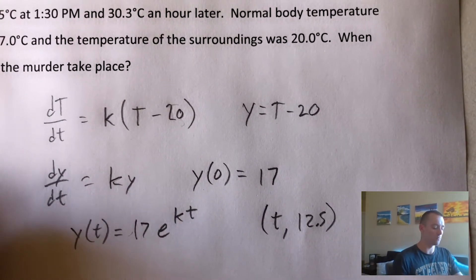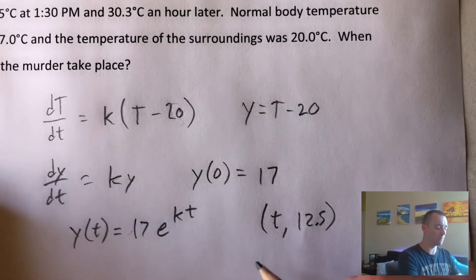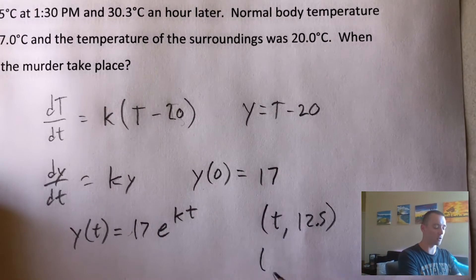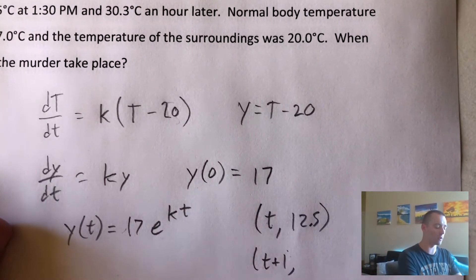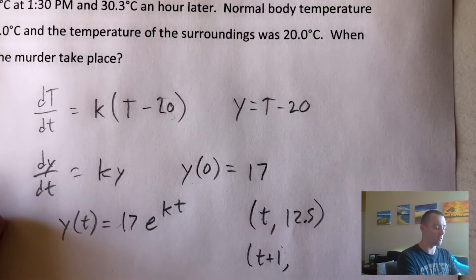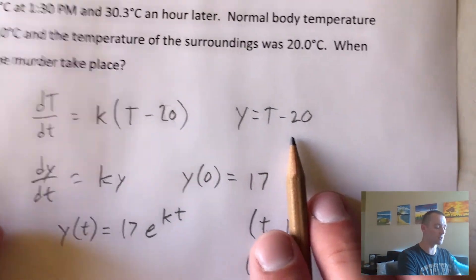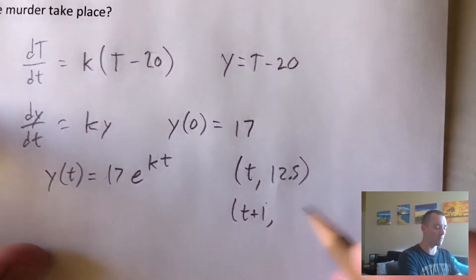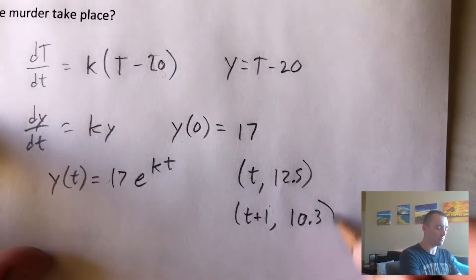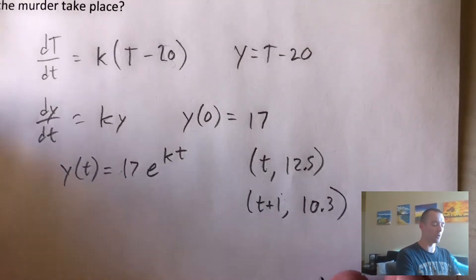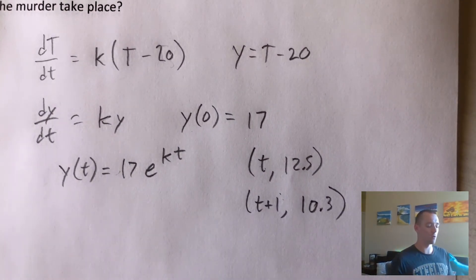One hour later, the temperature was 30.3 degrees. So at time T0 plus 1, we know the temperature was 30.3 degrees. That means Y at T0 plus 1 equals 30.3 minus 20, which gives us 10.3. These are the two points we want to plug into our equation for Y to figure out K.